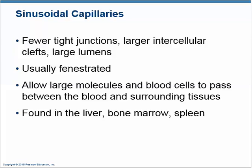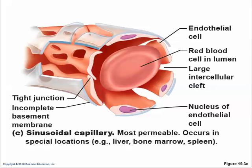Sinusoidal capillaries have big holes — 'sinus' means big hole. So there are fenestrations plus large holes, and what they do is allow large molecules and even blood cells to pass. We need them where solid material is passing through — for example, in the bone marrow where blood cells are made and must enter the bloodstream through the sinusoid capillaries. We also find them in the liver and the spleen.